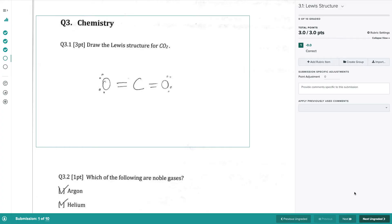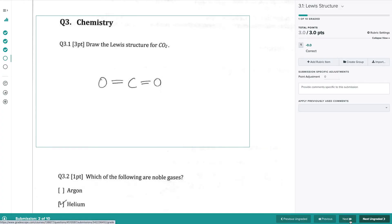Now we click the next button and are presented with the next student's answer to this same question. This student made a mistake. They forgot the electrons around the O's. We add a rubric item corresponding to this mistake.